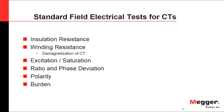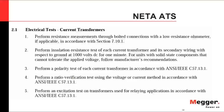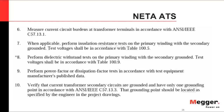Looking at the NETA standard, it requests: resistance or contact resistance measurements, insulation resistance testing not exceeding 1000 volts, polarity test, ratio verification test, excitation test, measurement of the current circuit burden at the transformer terminals, insulation resistance test on the primary winding with secondary grounded, and if possible, power factor or dissipation factor test. It also requires verifying that transformer secondary circuits are grounded according to the standard.